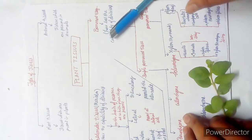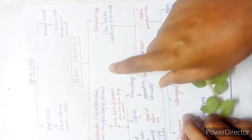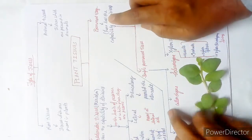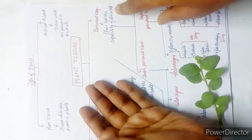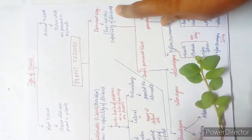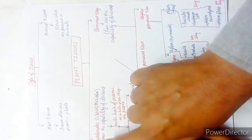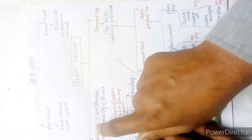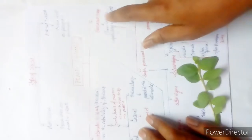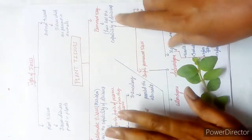Meristematic tissues have the capability of cell division — they can divide. They are known as meristem. Permanent tissues have lost the capability of division. One important point: permanent tissues are derived from some meristematic tissue — some meristematic cells lose their ability to divide and become permanent tissue.